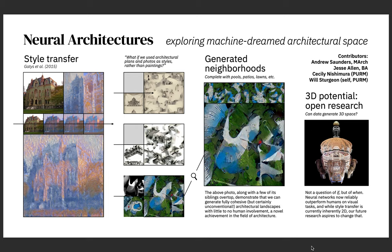I'm Will Sturgeon. I worked with Professor Andrew Saunders in the Graduate School of Architecture here at Penn over the summer with Cecily Nishimura, another Penn undergrad, as well as Jesse Allen, a Penn graduate architecture student. This is a brief overview of our project, which I'm calling Neural Architectures.